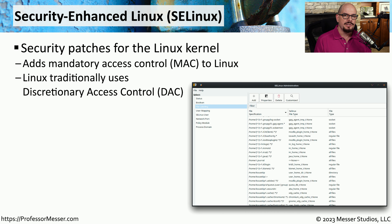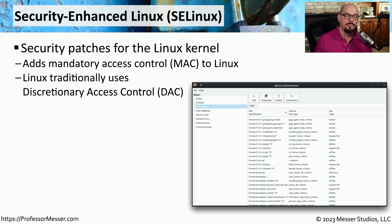The Linux operating system, by default, works as a discretionary access control device. This means that the user has their own discretion to be able to assign rights and permissions to different resources in the Linux operating system. But in many highly secure environments, a discretionary access control is not appropriate. Instead, they would like to use mandatory access control, where all of those rights and permissions are assigned by a central administrator.